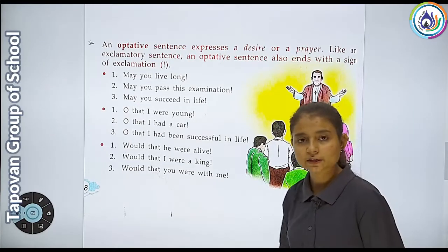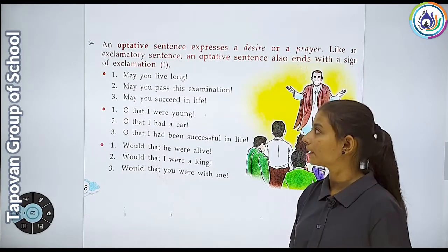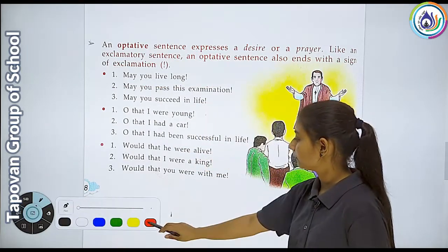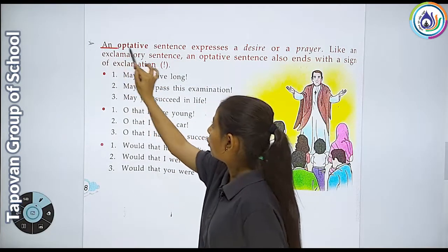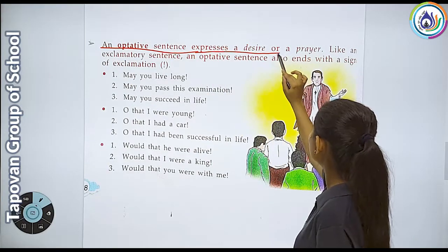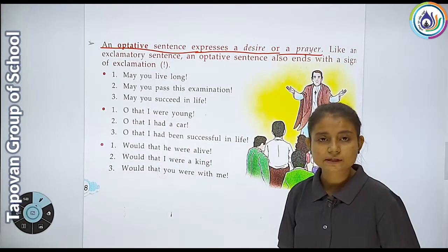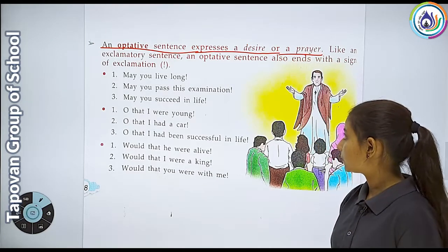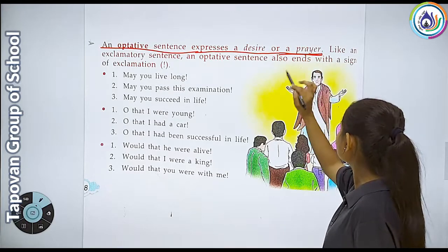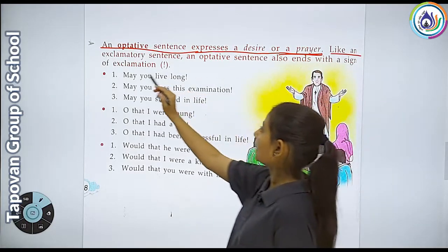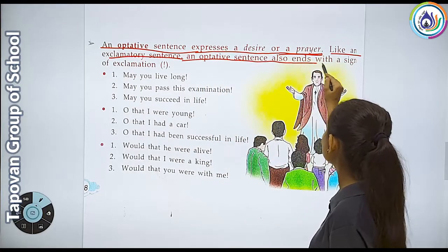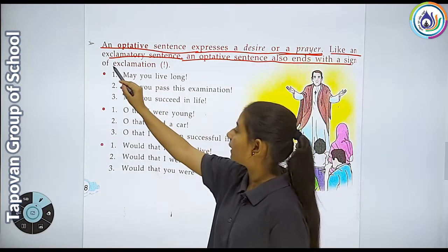Humne imperative sentence ke baare mein dekha. Ab hum optative sentence ke baare mein learn karenge. An optative sentence expresses a desire or a prayer. Optative sentence kya express kar raha hai - desire matlab hamari icha, aur prayer matlab prarthana. Like an exclamatory sentence, an optative sentence also ends with a sign of exclamation.